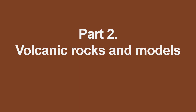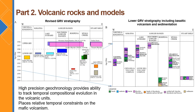Part two: volcanic rocks and models. We have recent high-precision geochronology for various stratigraphic units within the Gawler Range Volcanics, which has allowed us to track the temporal compositional evolution within those units and also place relative temporal constraints on the mafic volcanism. This means we can have a detailed look at the variation within the geochemistry and isotope compositions of these units and track how they change throughout the evolution of the volcanism.